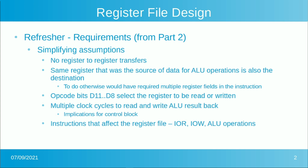A reminder from the Part 2 video: our requirements for the register file include the simplifying assumption that there are no register-to-register transfers. This register file takes data and sends it either to the peripherals or the ALU, or reads it from the peripherals, but does not transfer from one register to another. The same register that is the source of data for the ALU is also the destination.